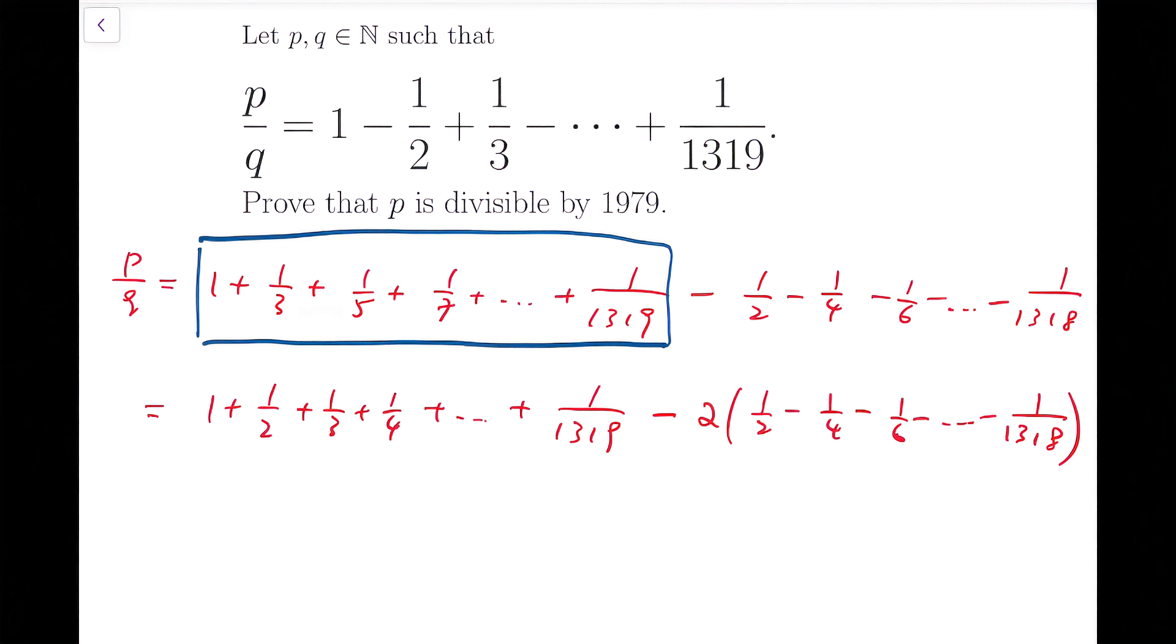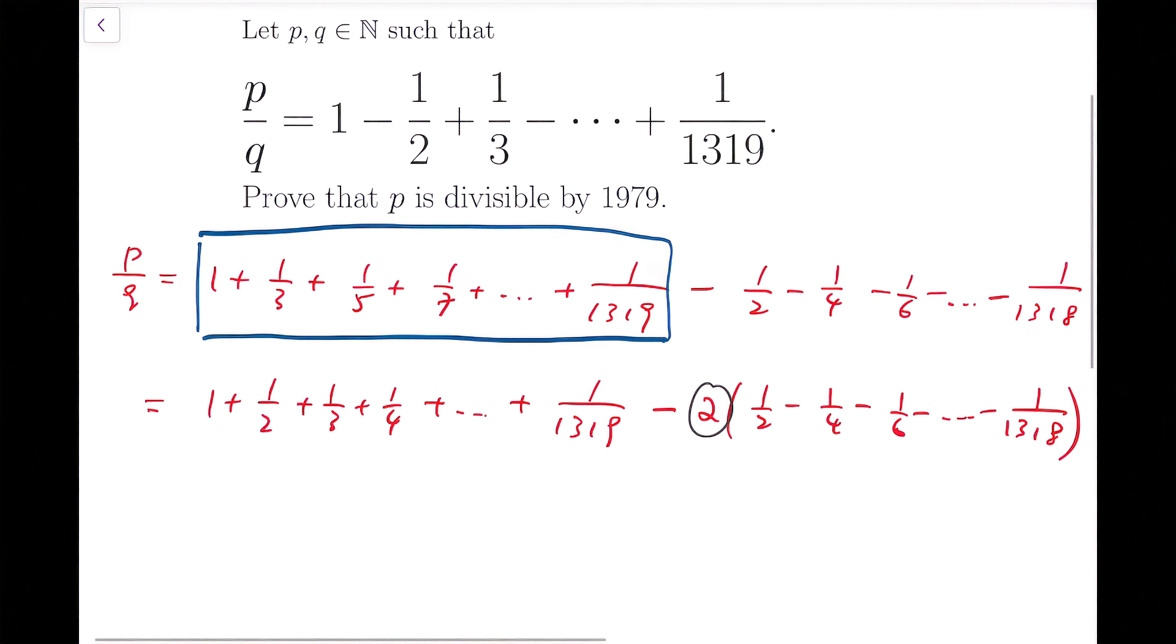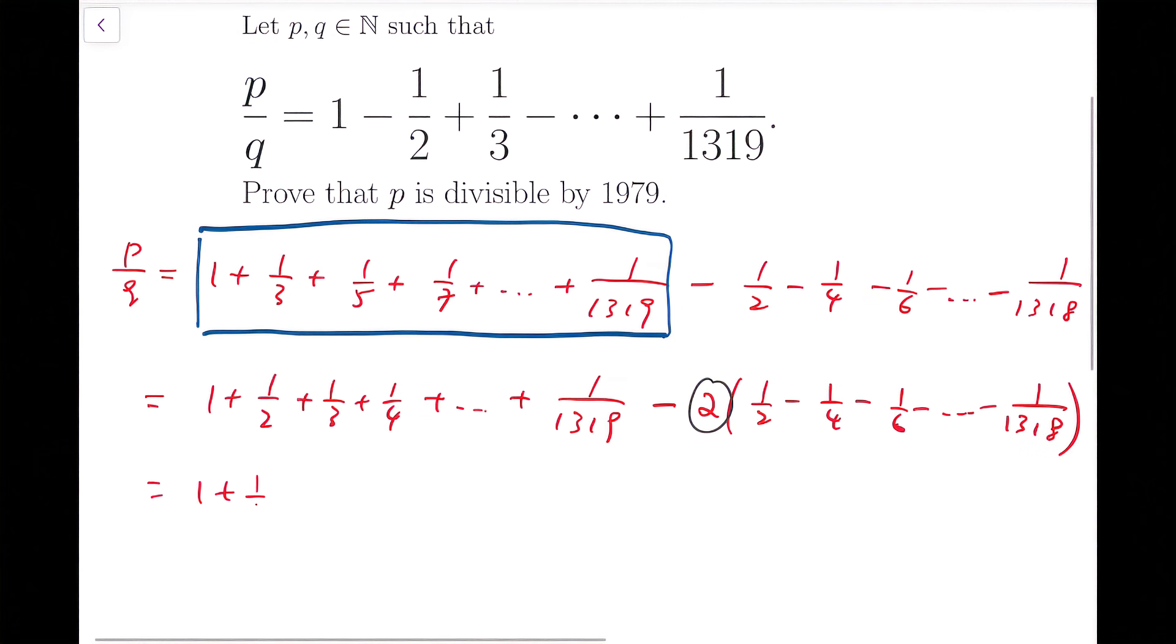Now coincidentally, this factor of 2 will cancel out with the denominators, with all the even denominators, and it will become - let me first copy the first half - minus, it's actually 1 plus 1 over 2, 1 over 3, all the way to 1 over 659.